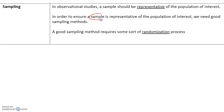Recall that a sample is a subset of the population. The population is everybody, and a sample is just a small subset of the population. To get the sample, we need good sampling methods, and a good sampling method requires some sort of randomization process. We will talk more about this in the next video.